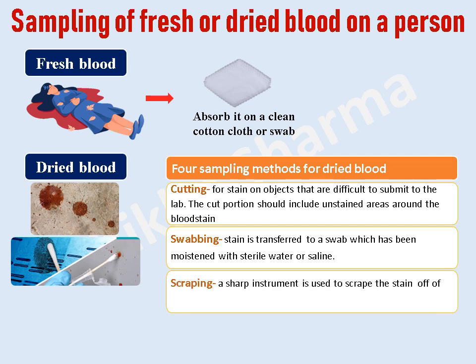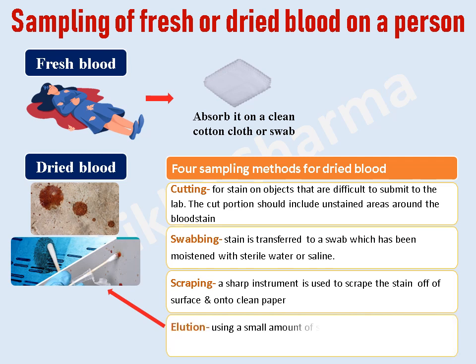First, cutting: this method is mainly used for stains on objects that are difficult to submit to the lab as a whole, so the stained portion is cut. The cut portion should also include unstained areas around the blood stain. Second, swabbing method: the stain is transferred to a swab which has been moistened with sterile water or saline. Third, scraping: a sharp instrument is used to scrape the stain from a surface and transfer it onto clean sterile paper. Fourth, elution: the personnel uses a small amount of saline or distilled water to dissolve the dried stain.